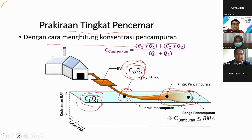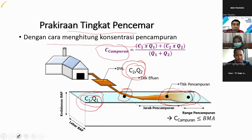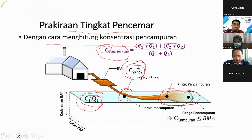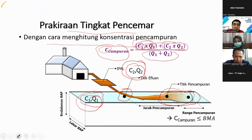C campuran — konsentrasi dari misalnya COD, BOD, atau TSS — dihitung dengan rumus: C campuran = (C1 × Q1) + (C2 × Q2) dibagi total debit (Q1 + Q2). Di sini C1 dan Q1 adalah konsentrasi dan debit sungai, sedangkan C2 dan Q2 adalah konsentrasi dan debit limbah yang kita buang. Nanti akan ketemu berapa COD campuran, berapa BOD campuran, dan seterusnya.